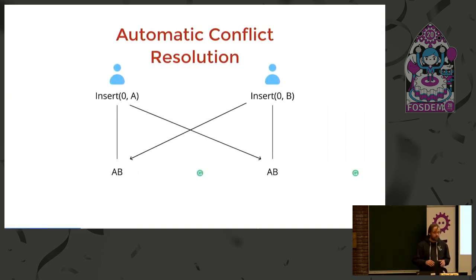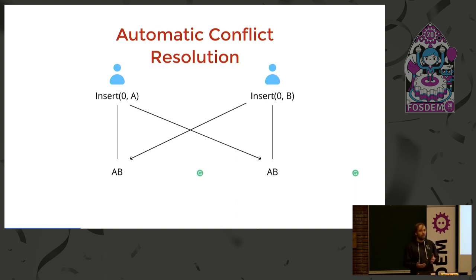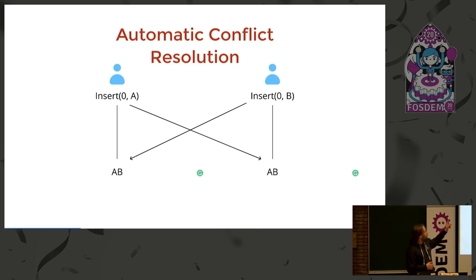So what's the problem that YJS tries to solve? It's automatic conflict resolution — it's kind of magic. Assume that two users are working on the same document. They have a text document, and both are inserting a character at the same time at the same position. They first apply their change on their own document, then propagate the change to the other peers. This conflict is automatically resolved, and the documents are merged automatically. Both users will end up with the same document, which is really important.